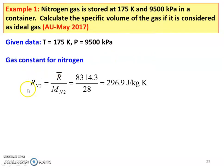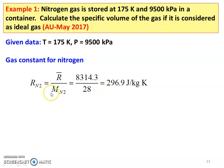First, we have to calculate the gas constant for nitrogen. R_N2 equals R-bar divided by the molecular weight of nitrogen. R-bar is the universal gas constant, which is constant for all gases: 8314.3 joules per kilogram-mol Kelvin, divided by the molecular weight of nitrogen, which is 28. The gas constant for nitrogen is 296.9 joules per kilogram Kelvin.